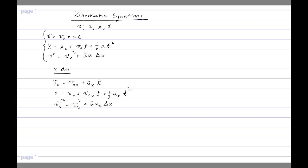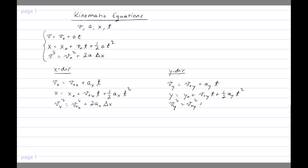We can write the same equations in the y direction: v-sub-y equals v-initial-y plus a-y times t. Then y equals y-naught plus v₀y times t plus one-half a-y times t squared. And the last equation is v-y squared equals v-initial-y squared plus 2a-y delta y. So here we have the kinematic equations written in both the x and y directions.